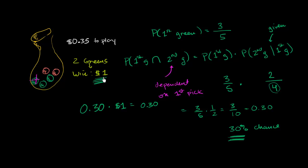30% chance of winning $1. You would expect, on average, if you were to play this many times, that playing the game is going to give you $0.30. Now, would you want to give someone $0.35 to get, on average, $0.30? No. You would not want to play this game.